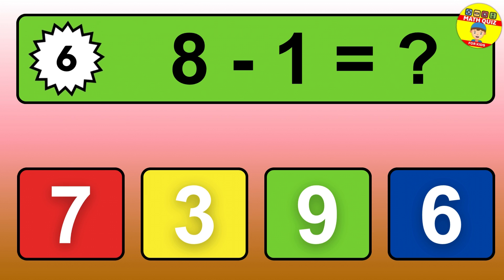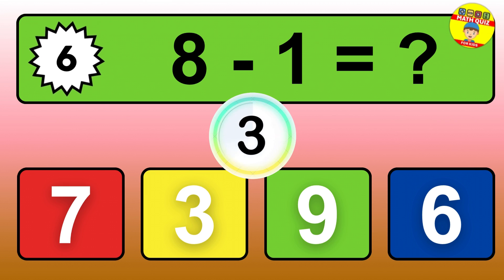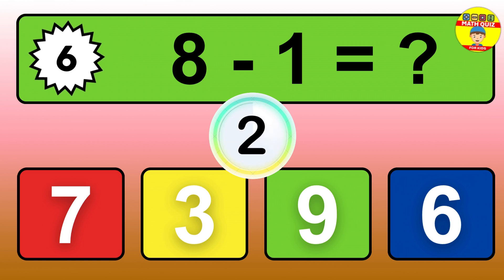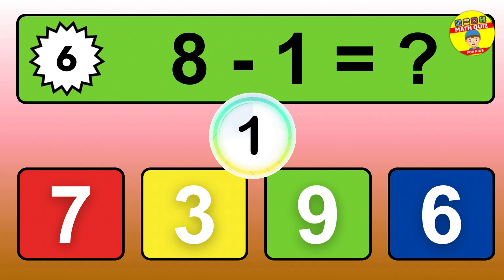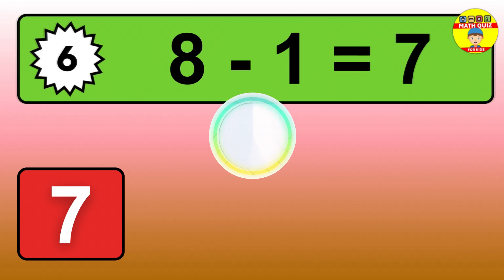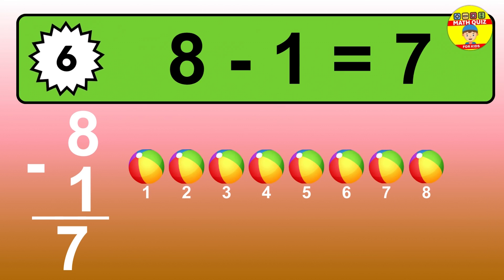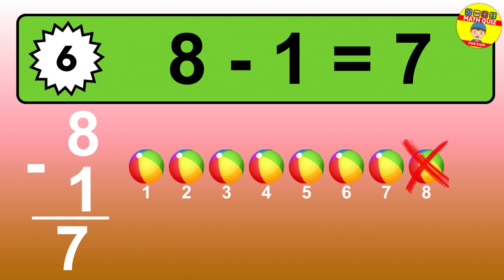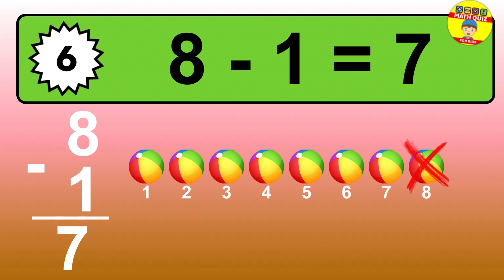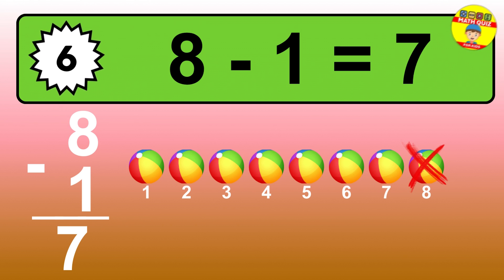Question six: eight minus one equals what? So the answer is, eight minus one is seven. Let's count it. One, two, three, four, five, six, seven.